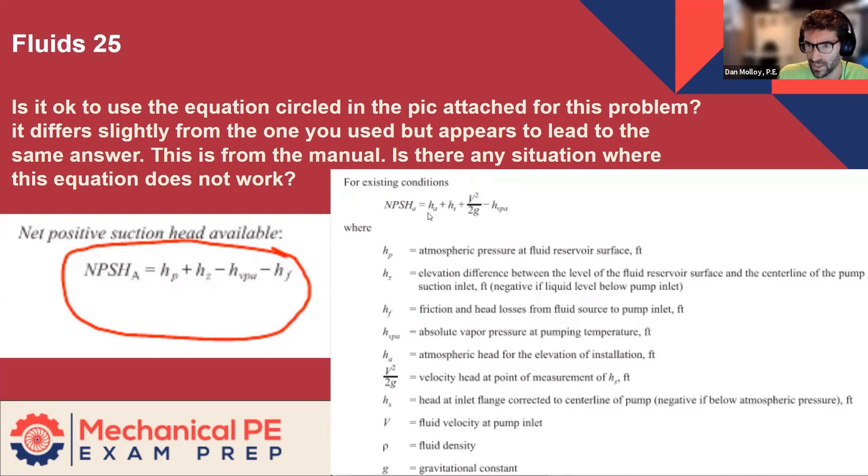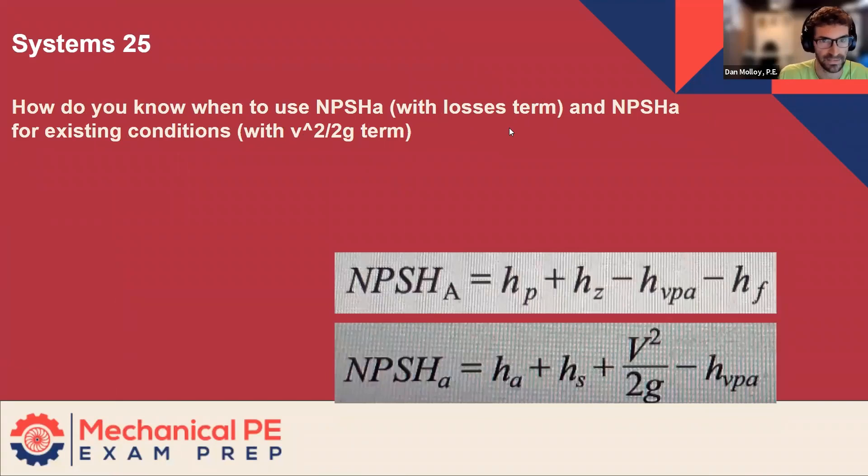I think what you're driving at is: can we use this other one, are they the same, when do we use which one? So hold that thought. The second question is more directly asking that very thing: how do you know when to use NPSHA with the losses term, which is the design version, versus NPSHA for existing conditions? So we have design versus existing conditions. How do you know which one you're dealing with? Well, it depends on the information that's given. Maybe we can draw a little picture and annotate this.